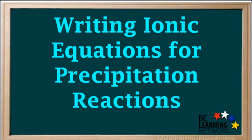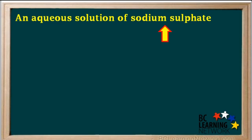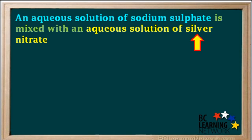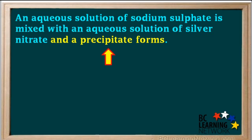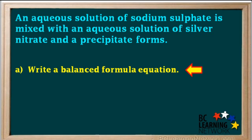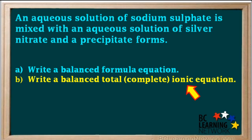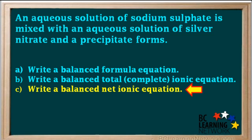In this video, you'll be shown a step-by-step procedure for writing formula, total ionic, and net ionic equations for a precipitation reaction. Here's the question: an aqueous solution of sodium sulfate is mixed with an aqueous solution of silver nitrate, and a precipitate forms. We're asked to write a balanced formula equation, a balanced total or complete ionic equation, and a balanced net ionic equation for this reaction.